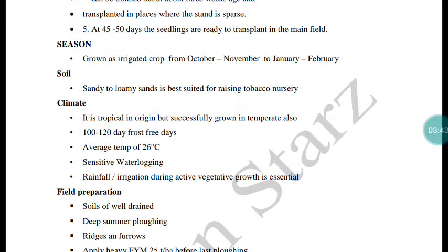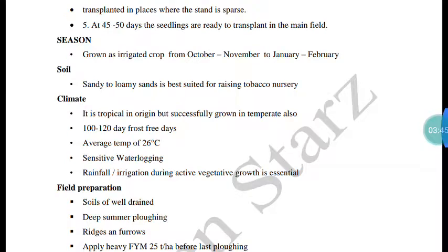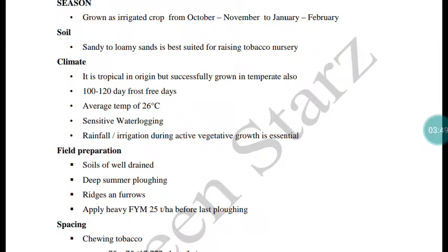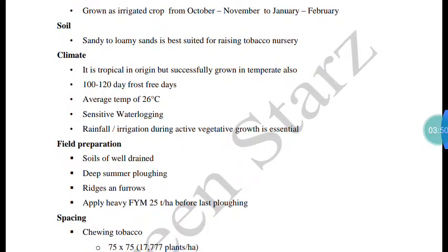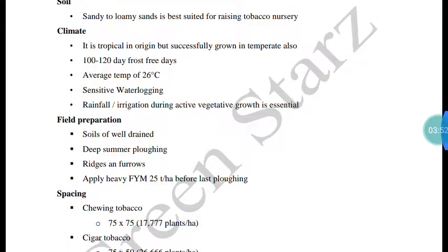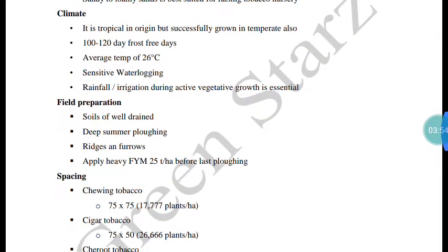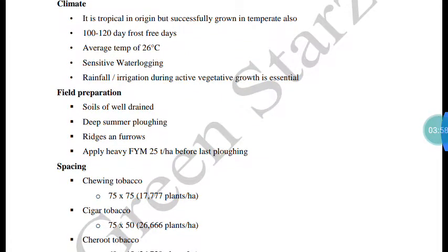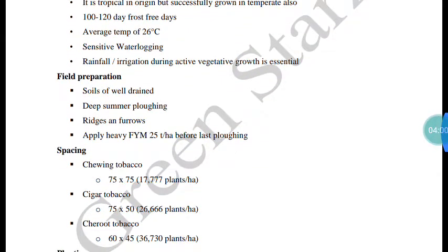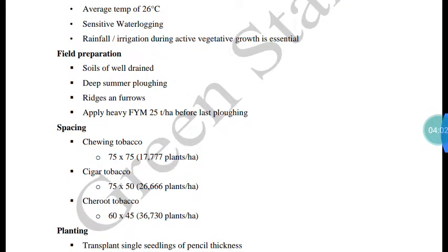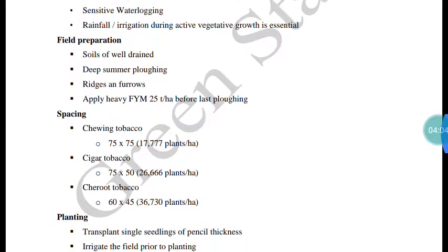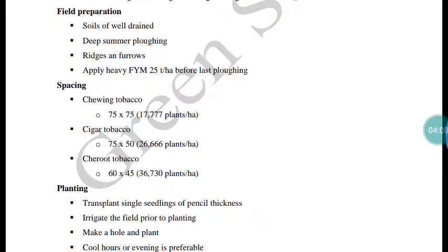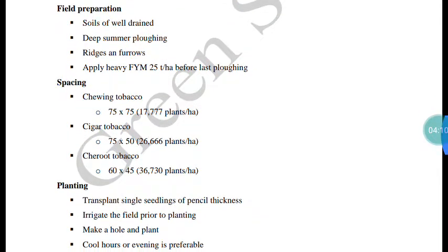The transplanting season is from end of October to November–January. Sandy loam soil is best suited, and the climate required is tropical. The temperature range is 26 degrees Celsius, with rainfall and irrigation both being important during critical periods.